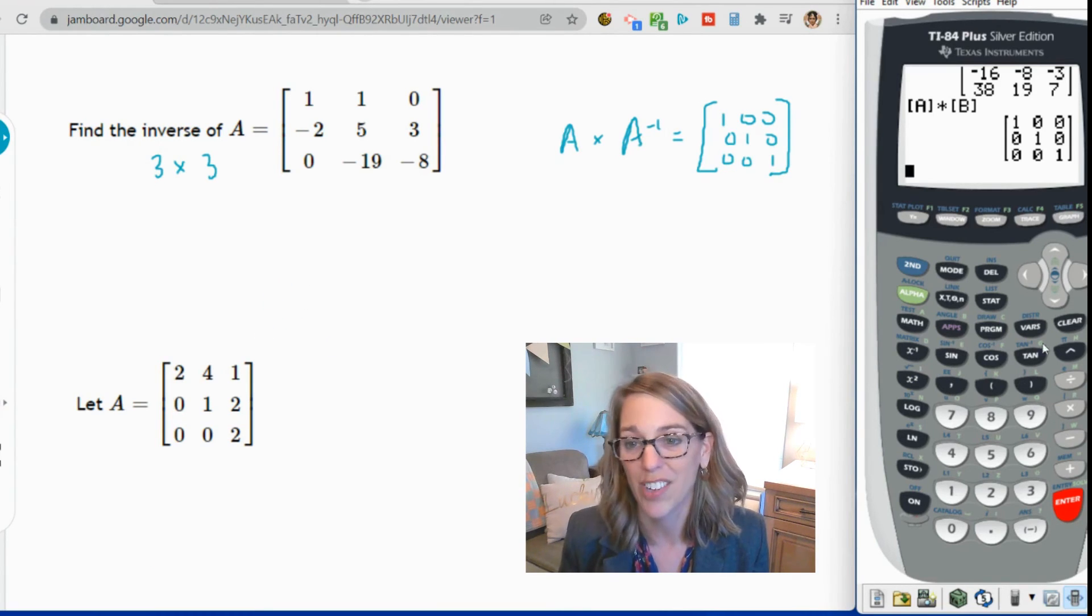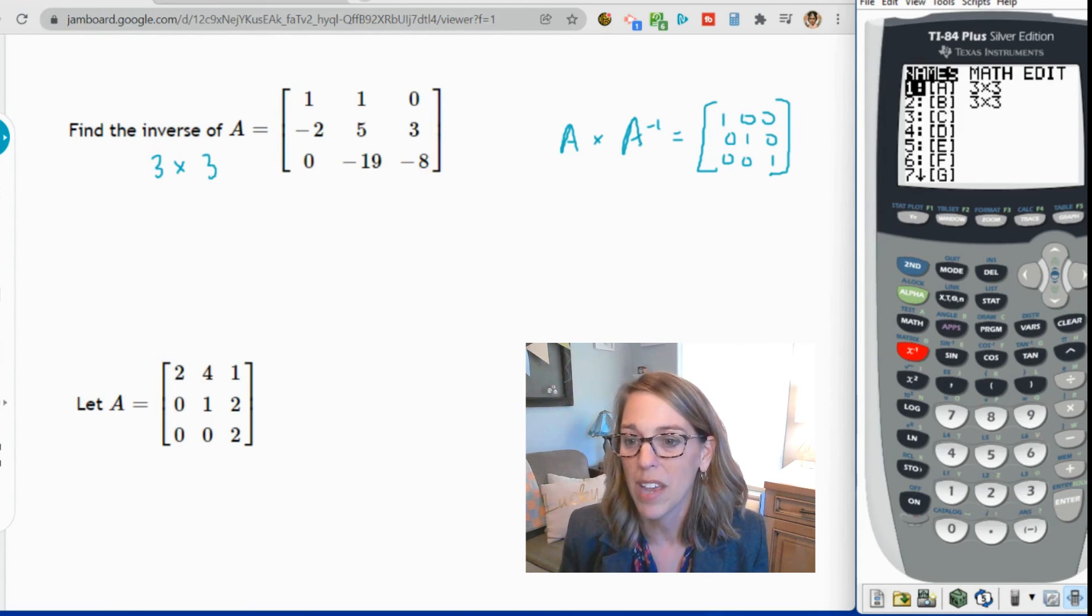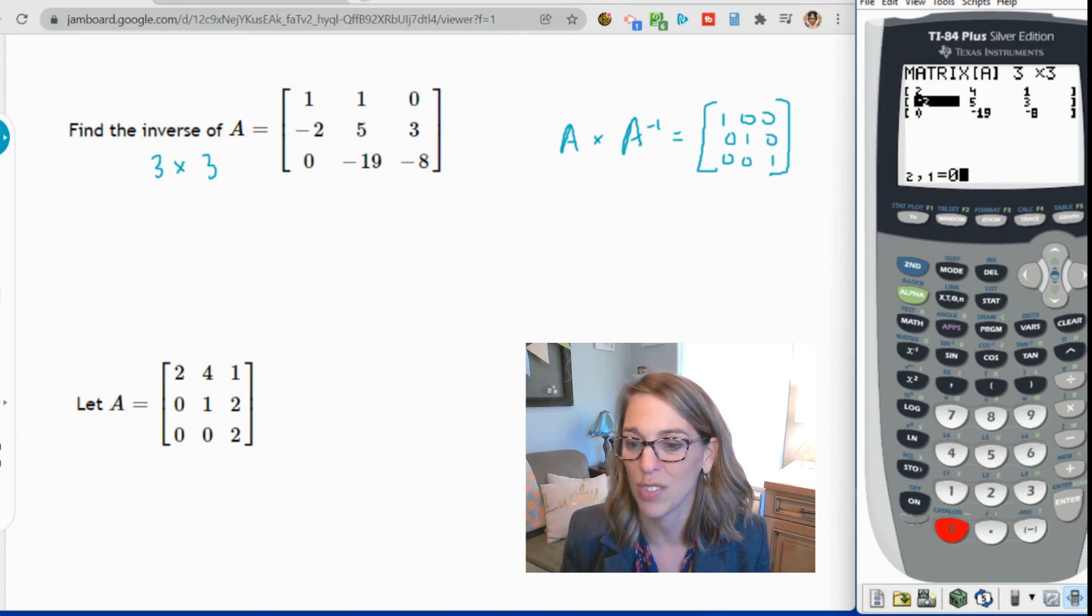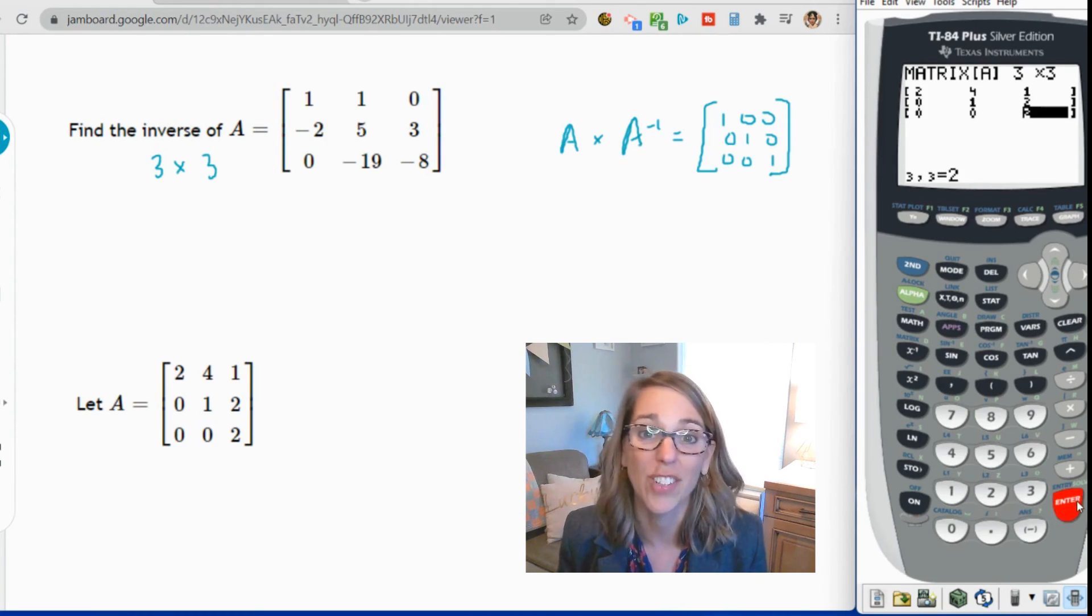This one's going to have fractions when we're done. I want to go back into the matrix menu. I'm going to go ahead and edit matrix A and put the entries in for my second example. I'm just going to enter through and change these entries. So the first row is 2, enter, 4, enter, 1, enter. And then the second row is 0, 1, 2. So 0, 1, and 2. The third row is 0, 0, and 2. Okay, again, I just want to go to the home screen. So second, quit.